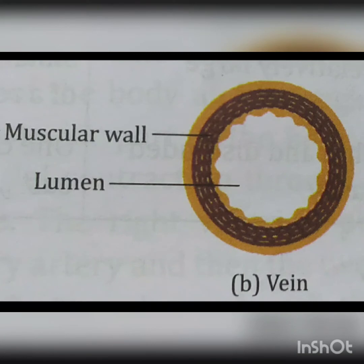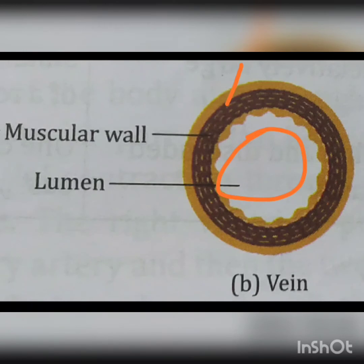The veins are thin-walled and less muscular vessels with valves. They have a wider lumen in which the blood flows smoothly. They carry impure, i.e. deoxygenated blood, back to the heart from different parts of the body. Only the pulmonary vein carries pure, oxygenated blood from the lungs.